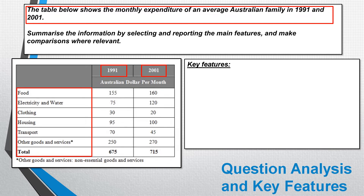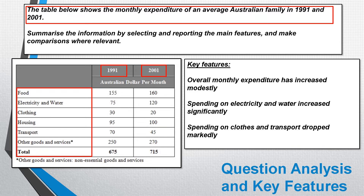The purpose of this table is to compare the expenditure from the two years, so it's not too complicated. I've picked out that overall monthly expenditure has increased modestly — you can see the increase from $675 to $715. Spending on electricity and water increased significantly; that's the one that increased the most. And spending on clothes and transport dropped markedly. Clothing expenditure dropped from $30 to $20, which is a 33 and a third percent drop, and spending on transport also dropped considerably. I've picked those two out to represent items that decreased in expenditure, and we'll use these for our overall overview paragraph.